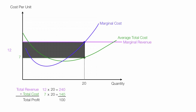I can also look at the profit rectangle directly. Profit is 12 minus 7, giving a height of 5, and a width of 20. So 5 times 20 also equals 100.